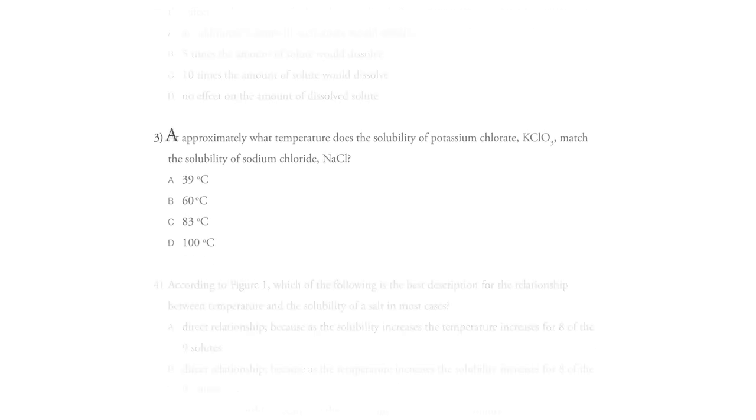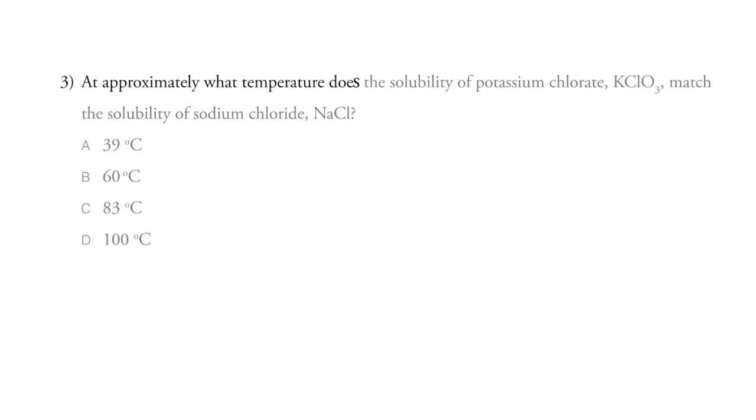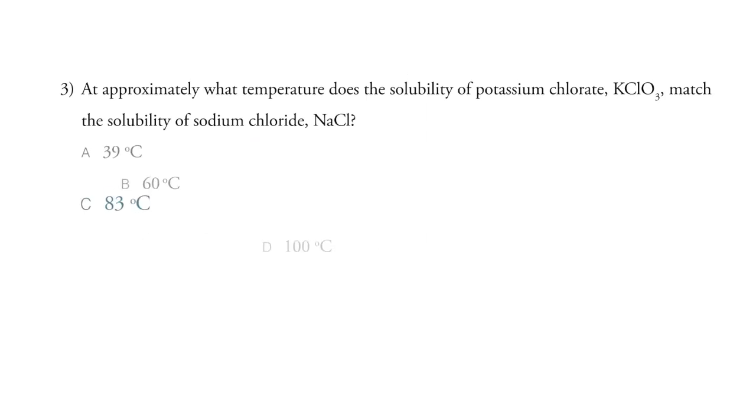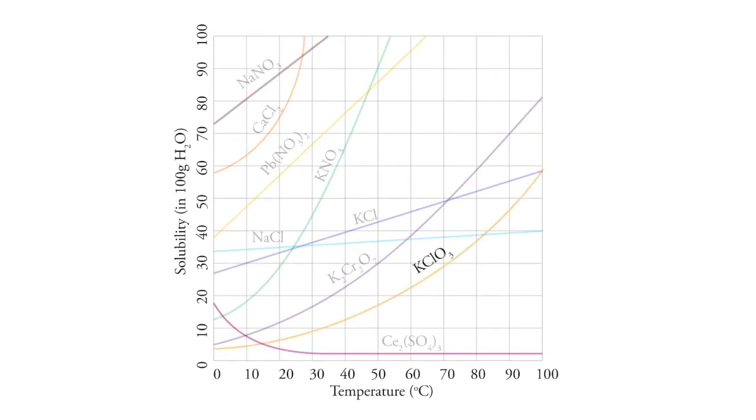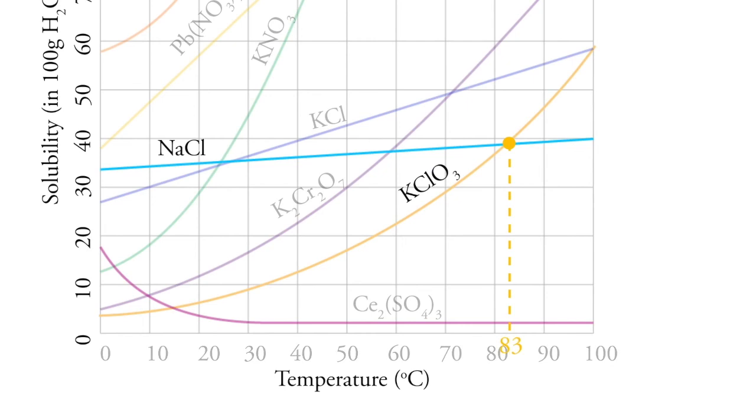Number three, at approximately what temperature does the solubility of potassium chlorate, KClO3, match the solubility of sodium chloride, which is table salt, NaCl? And this is the best answer, C, 83 degrees, because we see this line here and this line here and they meet right there. And we can go down and see that at 83 degrees, both of these salts have the same solubility.